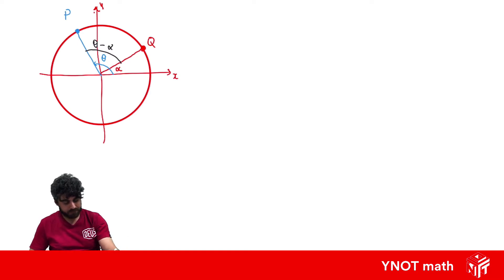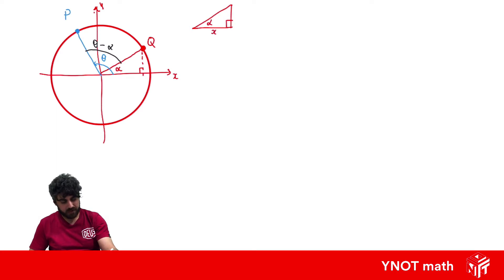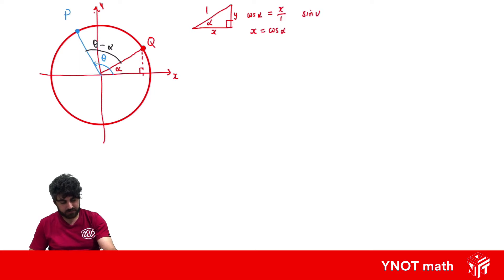Let's look at this right-angled triangle — we drop a perpendicular and draw it separately to gather information. If we let the horizontal side be x and the vertical side be y, the hypotenuse is 1 because it's the unit circle. So cos alpha equals x and sin alpha equals y, giving us the coordinates of point Q as (cos alpha, sin alpha).